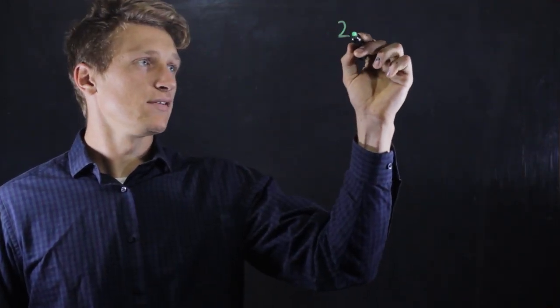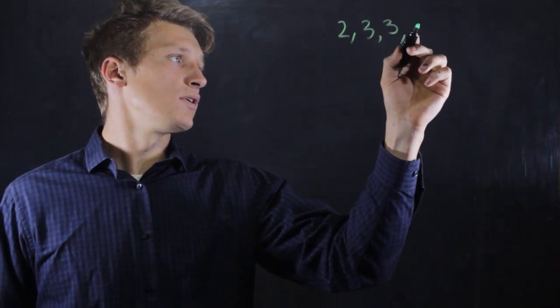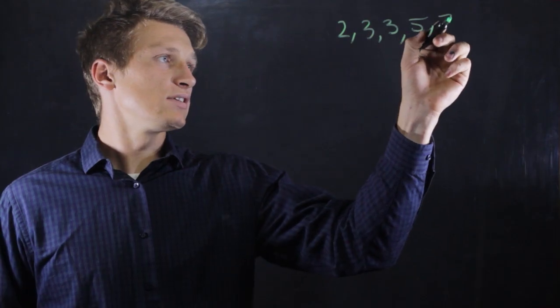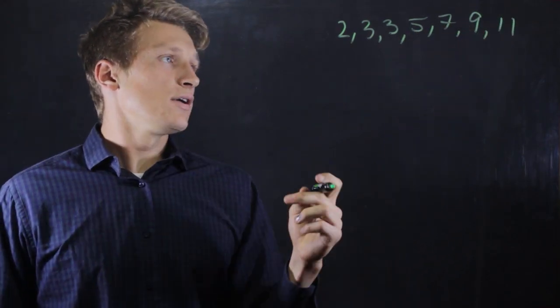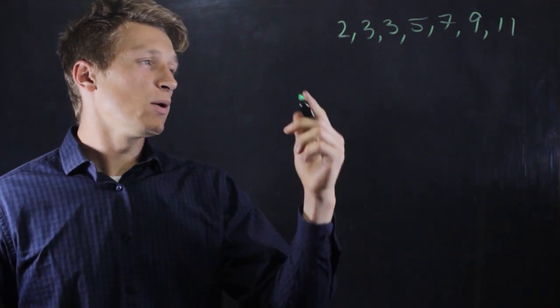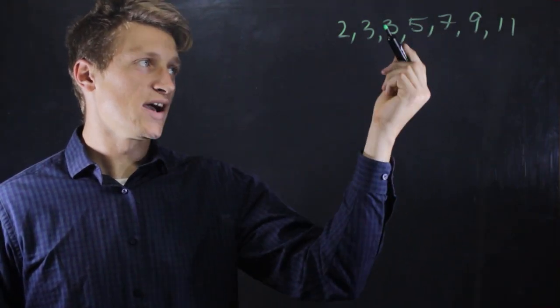Let's say they are 2, 3, 3, we'll keep it very simple, 5, 7, and 9, and 11. Okay, so now we want to see what the percentile rank of a student who scored 5 was.